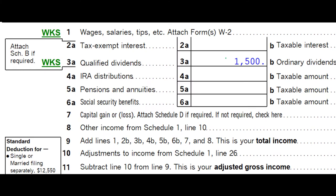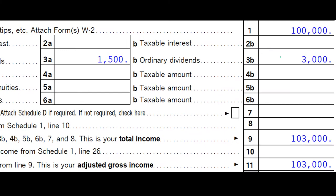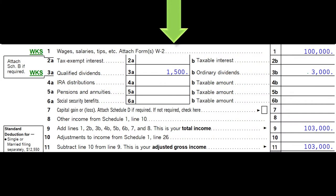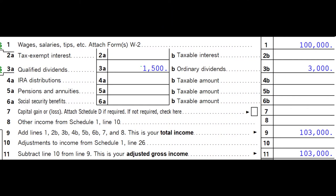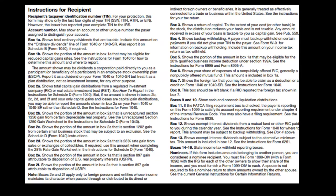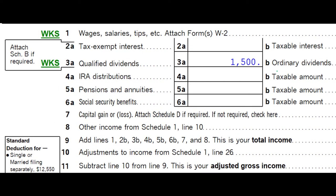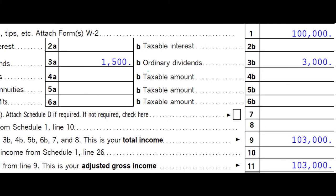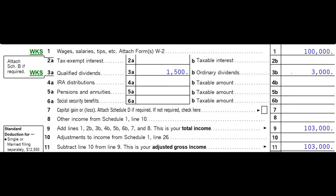On the first page of the tax return, we have the qualified dividend portion and then ordinary dividends. Looking at the 1099-DIV, ordinary dividends would be in box 1A, and the qualified dividends would be in 1B. So I wouldn't be saying I had 4,500 dividends - I'm saying I had 3,000 dividends and of those 3,000, 1,500 of them were qualified.